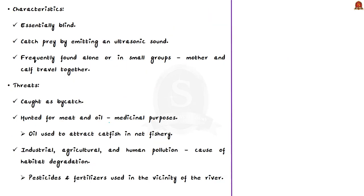The Ganges River Dolphin can only live in fresh water and is essentially blind. It catches prey using ultrasonic sound — it emits ultrasonic sound that reaches the prey, registers the image in its mind, and then catches the prey. The species is frequently found alone or in small groups; generally a mother and calf travel together. Major threats include bycatch, poaching for meat and oil — which are used medicinally and to attract catfish — and habitat degradation caused by industrial development, agricultural pollution, and human pollution.